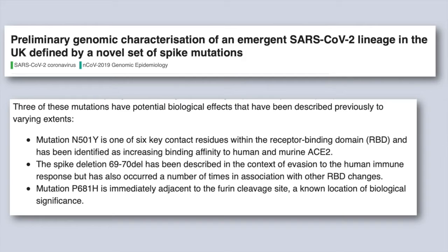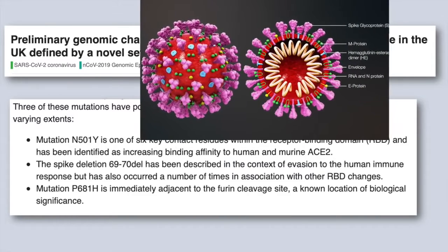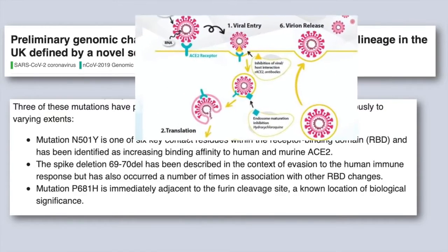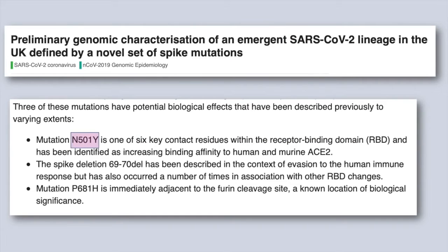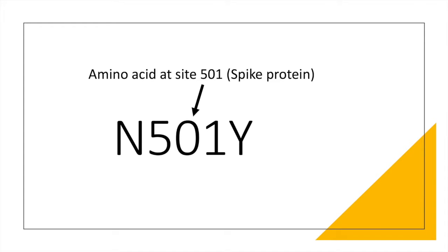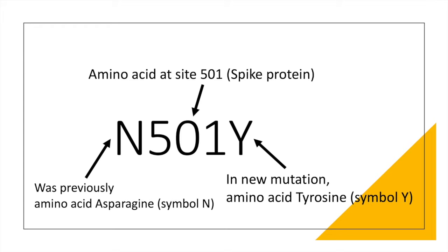The B.1.1.7 lineage has three important mutations, all on the spike protein — the spikes on the outside of the virus shell, which are also used to enter human cells via the ACE2 receptor. The most interesting mutation in the B.1.1.7 lineage is called N501Y. The name N501Y means the mutation has caused the amino acid at site 501 to become tyrosine (symbol Y), whereas earlier versions of the virus produced asparagine (symbol N).